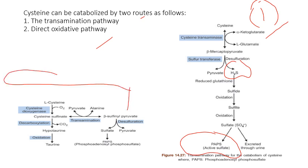The second pathway is the direct oxidative pathway. Here, cysteine is oxidized to cysteine sulfinite by the enzyme cysteine dioxygenase, which is then decarboxylated to hypotaurine. Hypotaurine is further oxidized to taurine. Alternatively, cysteine sulfinite may undergo transamination and give rise to sulfate, which can also be converted into active sulfate (PAPS). This is the overall fate of cysteine and cystine through the transamination pathway and direct oxidation pathway.